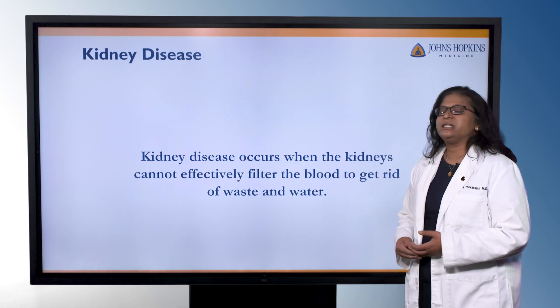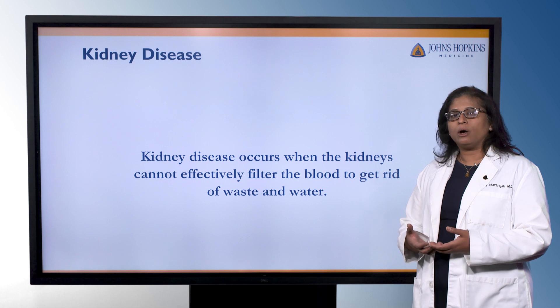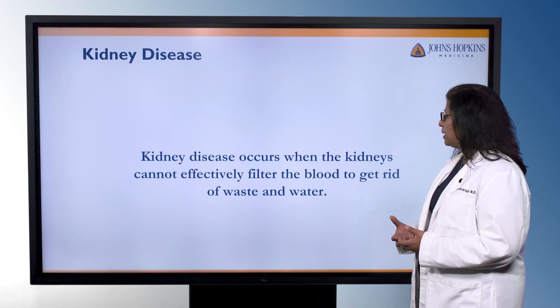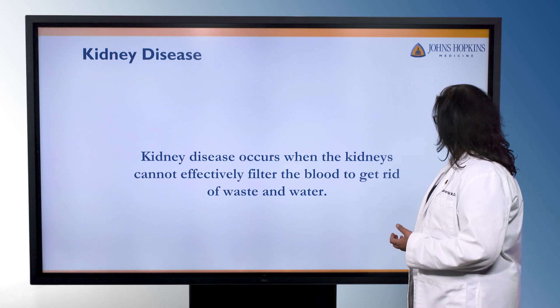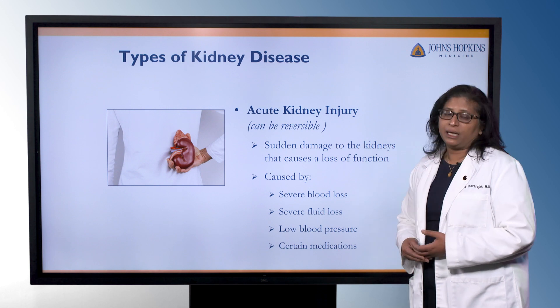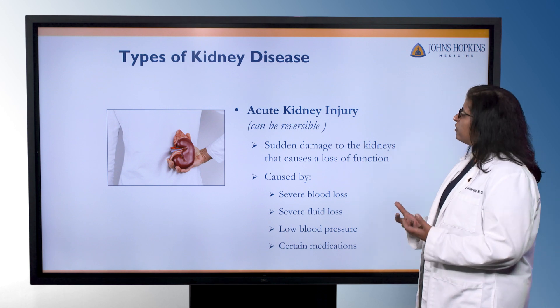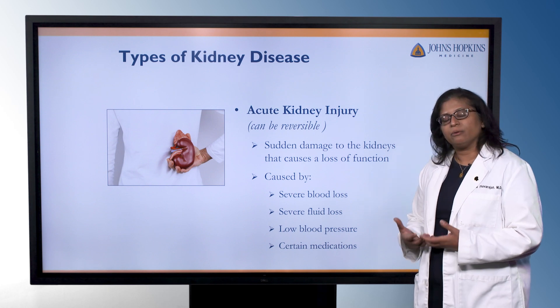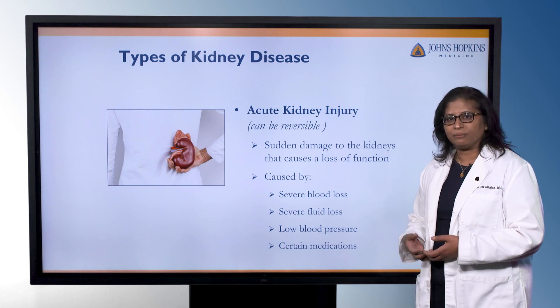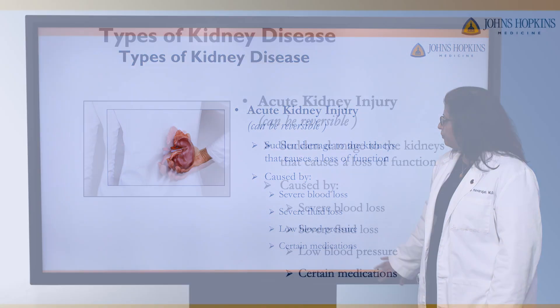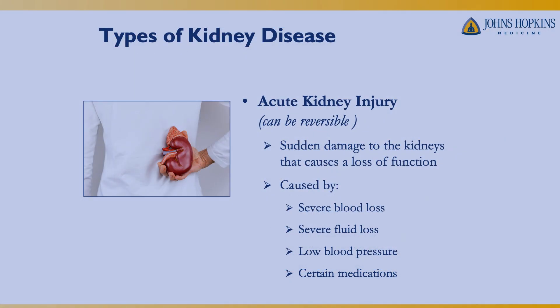Kidney disease occurs when the kidneys are no longer effectively able to filter the blood and get rid of waste and water. There are several types of kidney disease. The first is acute kidney injury, which is a sudden damage to the kidney resulting in loss of function. It can be reversible. Causes include severe blood loss, low blood pressure, severe fluid loss, or certain medications.